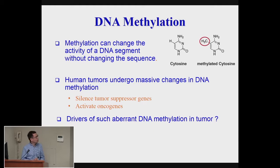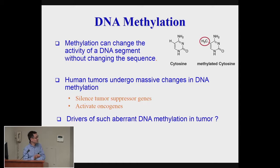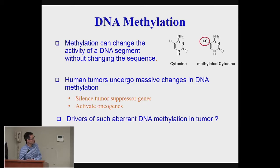I'm going to talk about our work on DNA methylation. We know DNA molecules consist of four nucleotides. One nucleotide, called cytosine, can be methylated. People found that human tumors undergo massive changes in DNA methylation. This can silence tumor suppressor genes and activate oncogenes to cause cancer. So we really want to know what genes cause this massive DNA dysregulation in methylation.